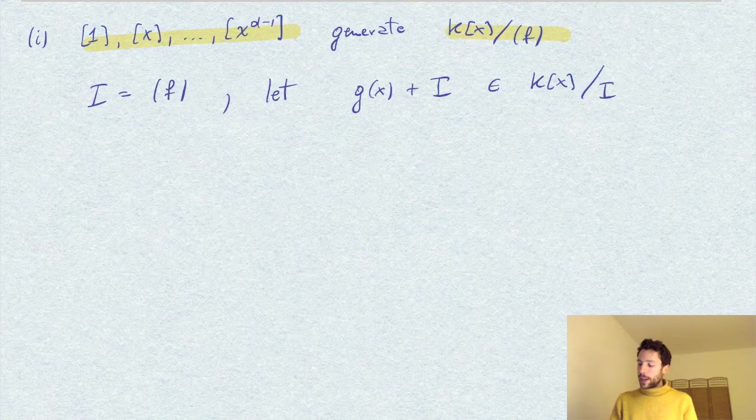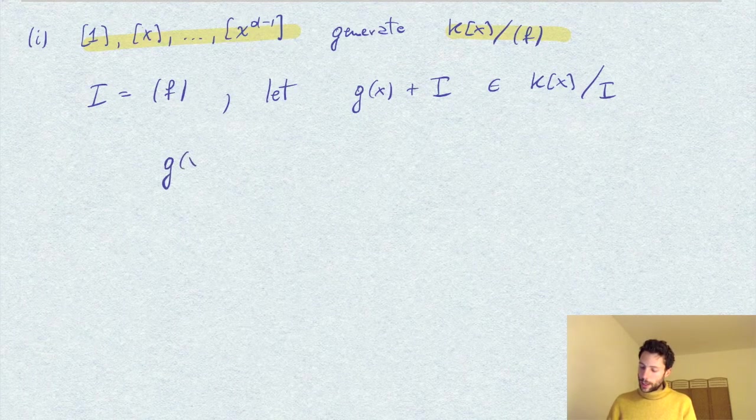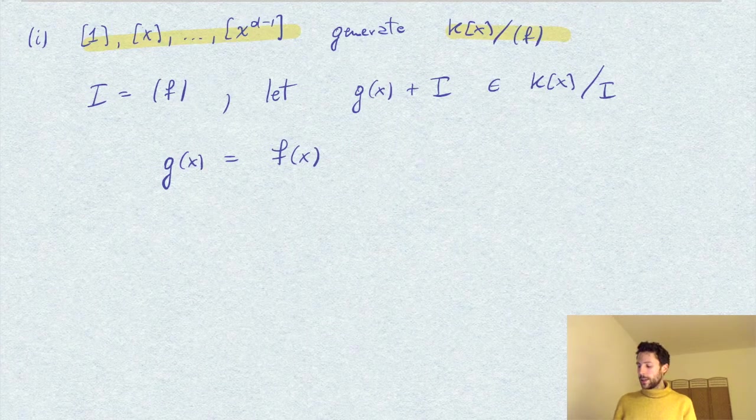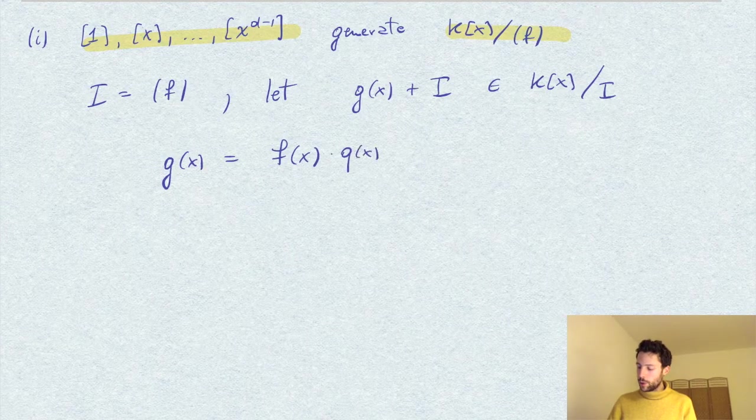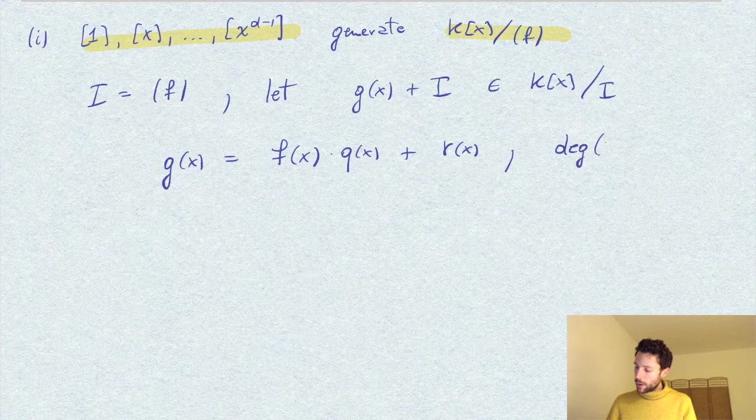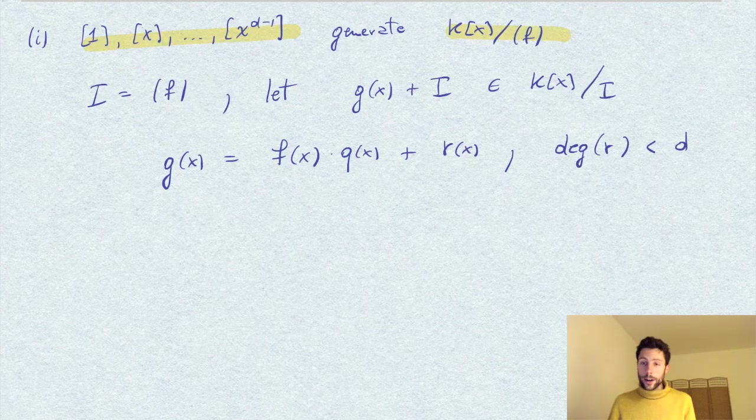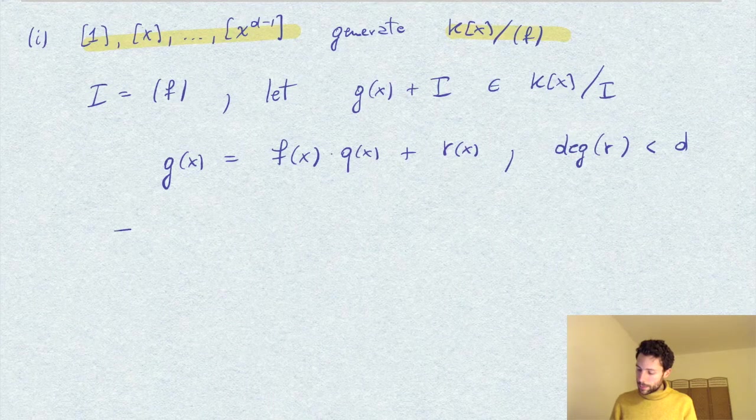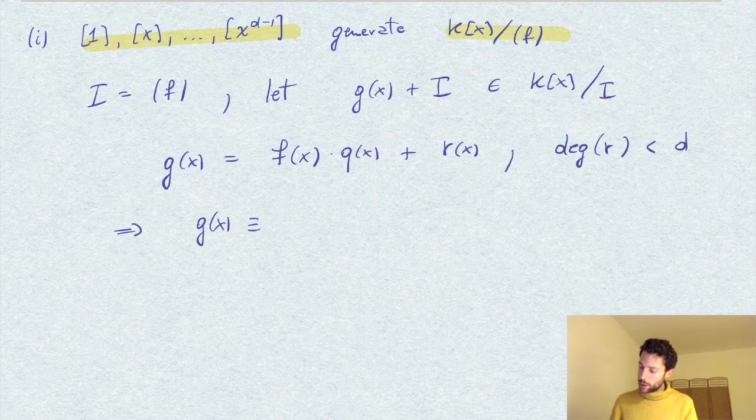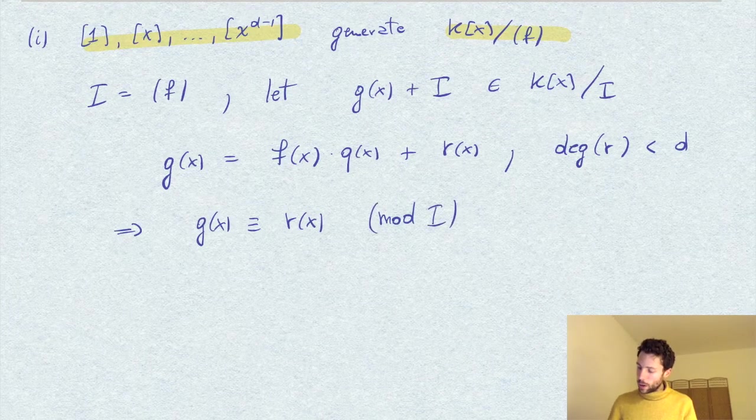Now we can apply Euclidean division with respect to f, so we can write g(x) = f(x)q(x) + r(x), where the degree of r is strictly less than the degree of f, which is d, or r equals 0. In any case, modulo f, g is congruent to r, or modulo I, the ideal generated by f.